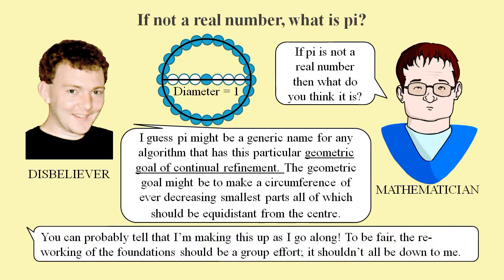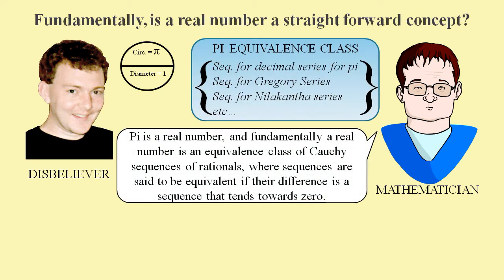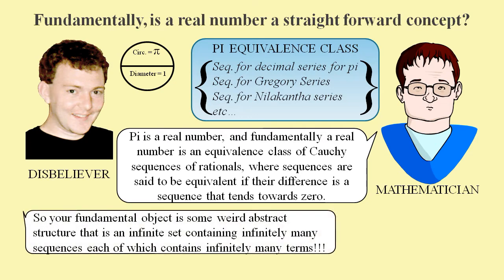And we still maintain that the onus should not be on us to create a new foundation for mathematics. Of course, we will be told how wrong we are. Modern mathematicians don't even think of pi as being a length. It is an equivalence class of Cauchy sequences, which means it is the abstract structure of an infinite set containing infinitely many sequences, each of which contains infinitely many terms.